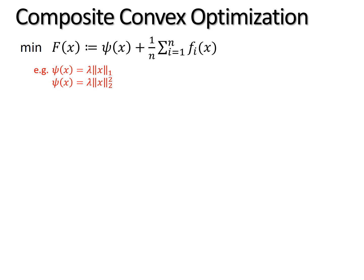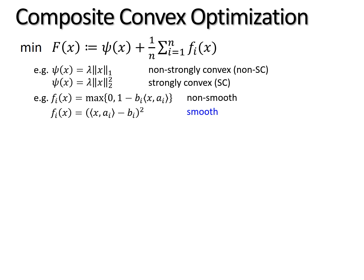Here the regularizer can be either the L1 loss or L2 loss, or more generally it could be either strongly convex or not strongly convex. Each loss function can be either the hinge loss or the least square loss, or more generally it can be either non-smooth or smooth.